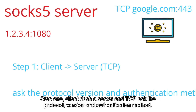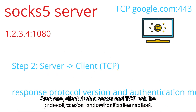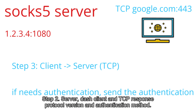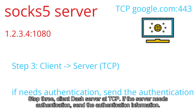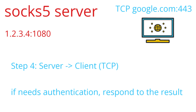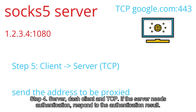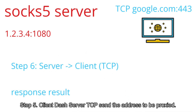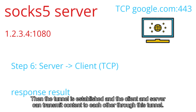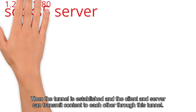For TCP proxying, the interaction steps are: Step 1 — client sends to server via TCP asking the protocol version and authentication method. Step 2 — server responds with protocol version and authentication method. Step 3 — if the server needs authentication, the client sends authentication information. Step 4 — if the server needs authentication, the server responds with the authentication result. Step 5 — client sends the address to be proxied. Step 6 — server responds with the result. The tunnel is then established, and the entire client-server process uses the TCP protocol.